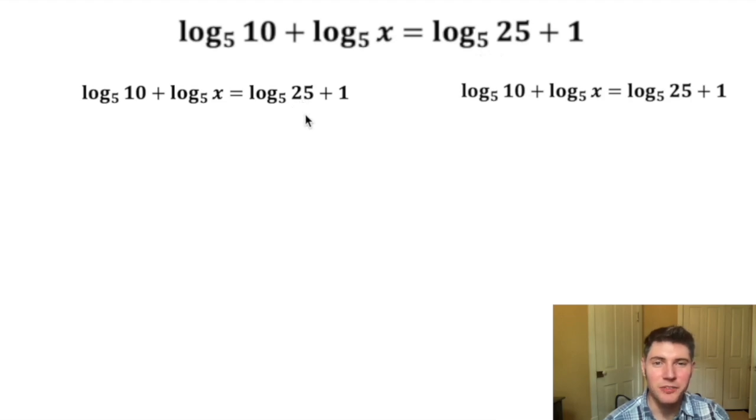First method, I want to subtract this log base 5 of 25 and bring it to the other side. So we'll copy the left side down and then subtract it from both sides, and that just leaves the 1 on the right-hand side.